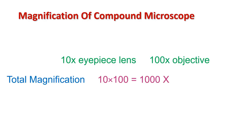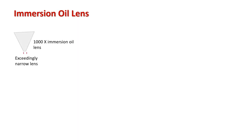The total magnification of the compound microscope is determined by the combination of objective and ocular lens power. For example, if you have a 10x eyepiece and a 100x objective, the total magnification would be 10 × 100 = 1000x. The oil immersion lens has a magnification power of 1000x and gives the maximum magnification.